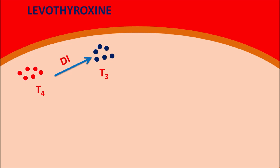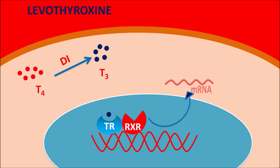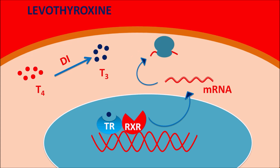T3 is the active form of thyroid hormone and targets DNA within the nucleus, where thyroid receptors are expressed. T3 binds to these thyroid receptors, which then undergo dimerization. These thyroid receptors are heterodimeric nuclear receptors — they dimerize with retinoid receptors and require coactivators, leading to DNA binding, gene transcription, and mRNA release, which promotes protein synthesis.